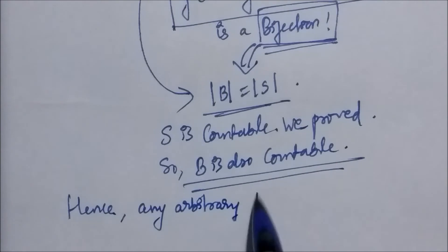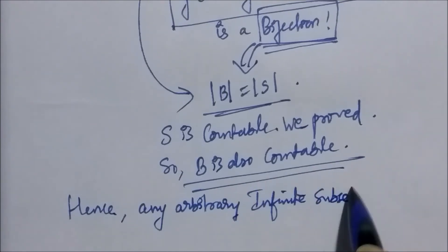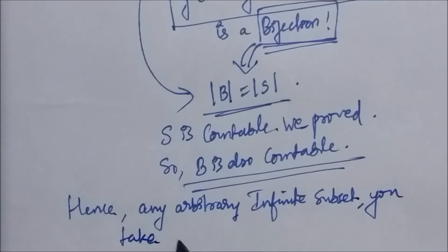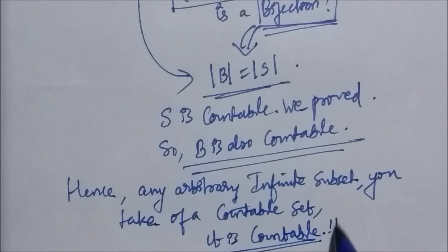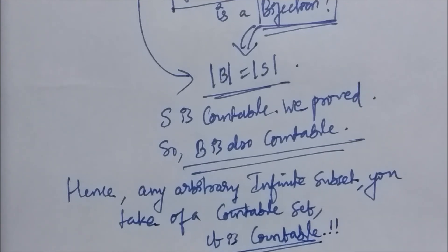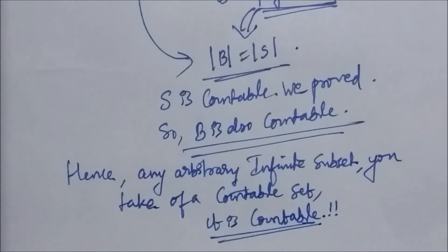Hence any arbitrary infinite subset of a countable set is going to be a countable set. Since we have proved that an arbitrary infinite subset of a countable set is countable, we get by universal generalization that any subset of a countable set is countable.